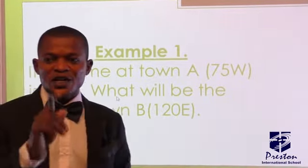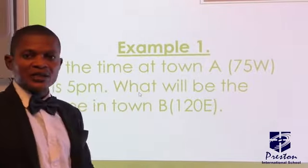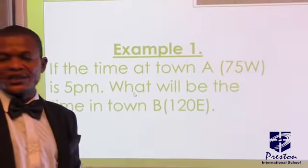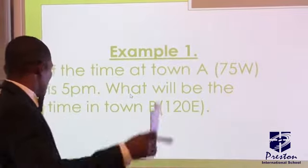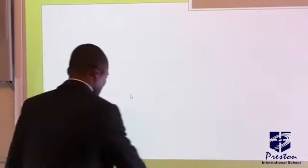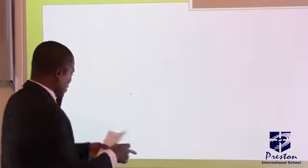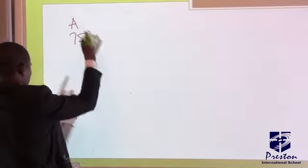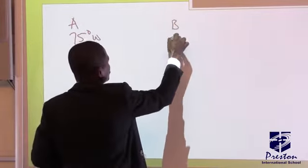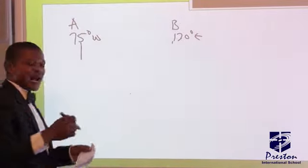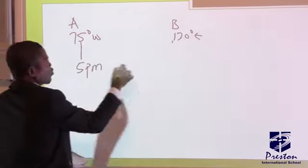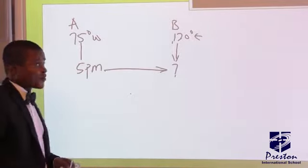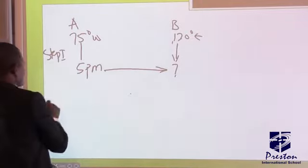Let's look at example one. Calculate if the time at town A, 75 degrees west, is 5 p.m., what would be the time in town B, 120 degrees east? Let's apply the steps we just outlined. The first step is to locate the places involved. Town A is 75 degrees west, town B is 120 degrees east. The time of town A was given to be 5 p.m., while the time of this place was not given. You put a question mark and draw an arrow.